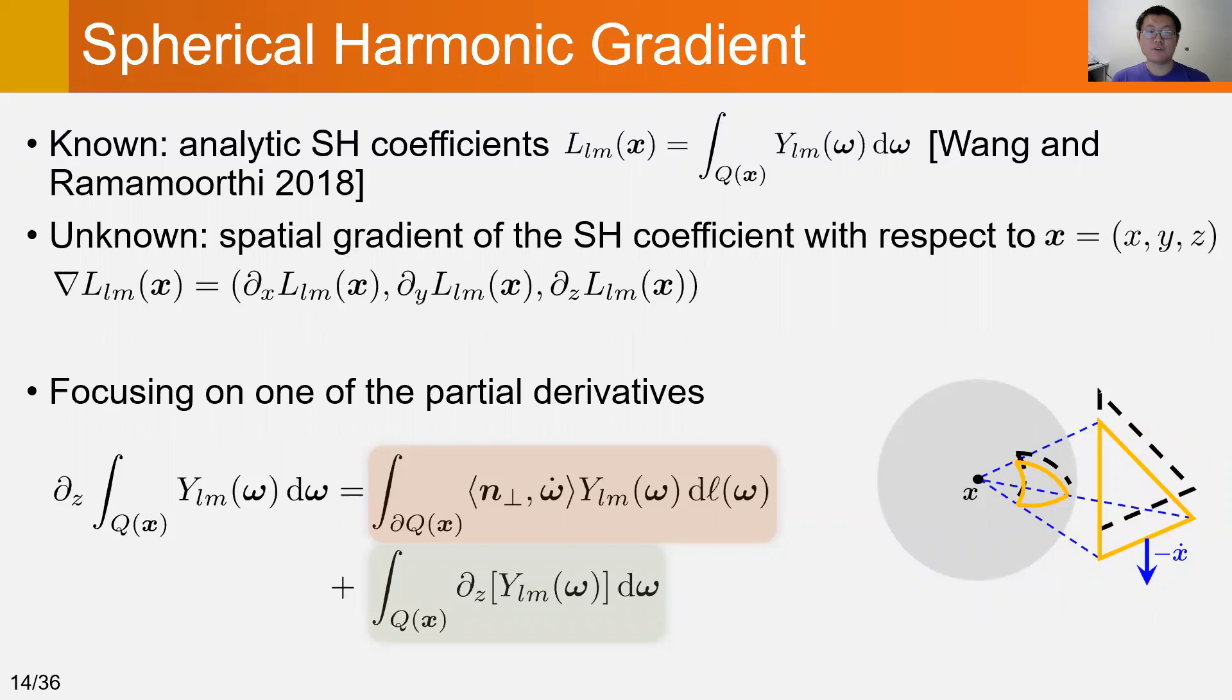Without loss of generality, we focus on one of the partial derivatives. By applying the Reynolds transport theorem, it can be rewritten as the sum of the green interior term and the orange boundary term.